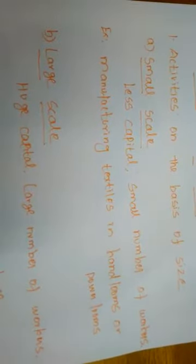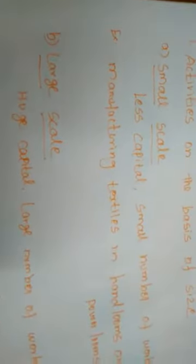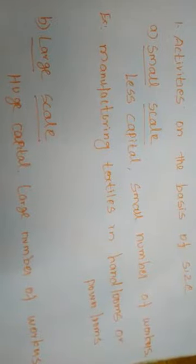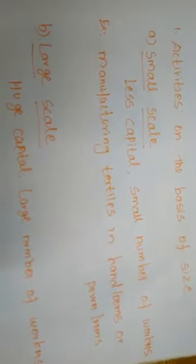For example, manufacturing textiles using handlooms or powerlooms. To establish a Small Scale Business Activity, the amount should not exceed 2 Crores, and the number of workers should not exceed 100. So below 100 workers and below 2 Crores — if entrepreneurs establish an industry under these conditions, that industry is called a Small Scale Industry.